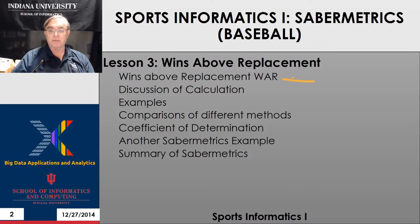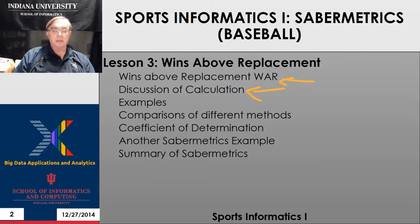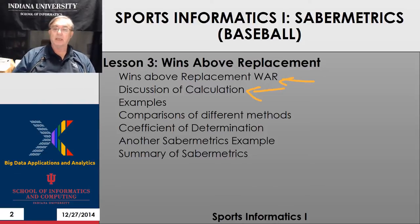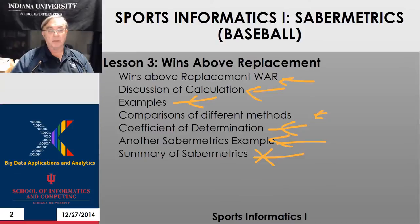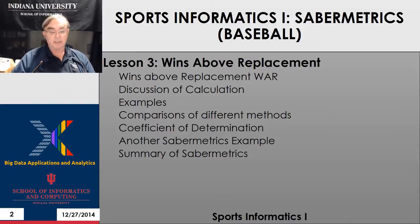So we define wins above replacement. There are many ways of calculating it, because it's defined intuitively as the best way of calculating the number of wins, which is 10 times the number of runs a given player produces. We give some examples of real people, compare different methods, have a little aside on statistics about the coefficient of determination, look at some fancy Sabermetrics examples, and then end with a summary. That's lesson three: wins above replacement.